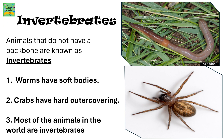Now let's find out what invertebrates are. Animals that do not have a backbone are known as invertebrates. For example, worms have a soft body, and crabs have a hard outer covering. Most of the animals in the world are invertebrates.